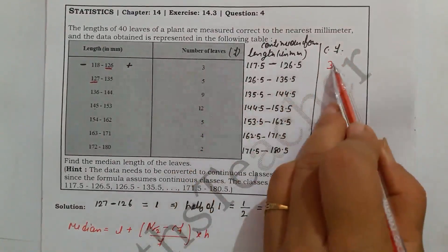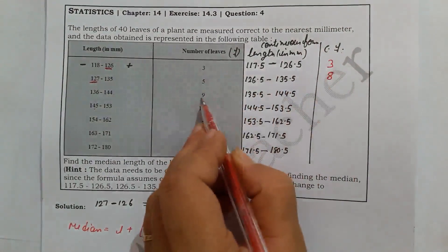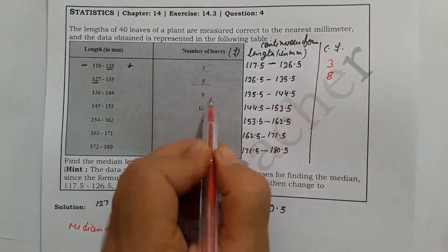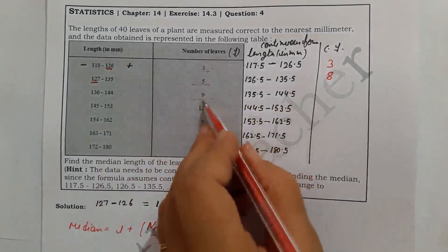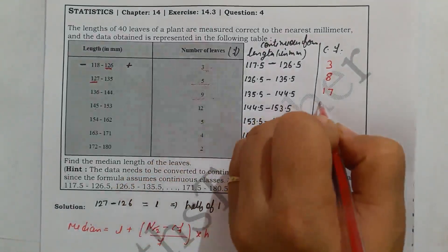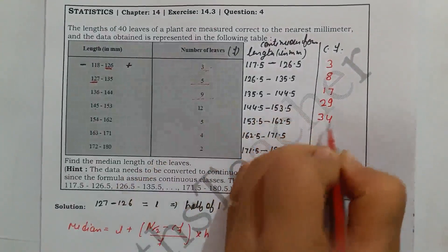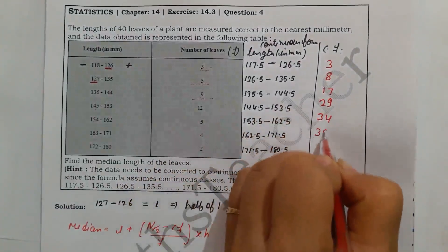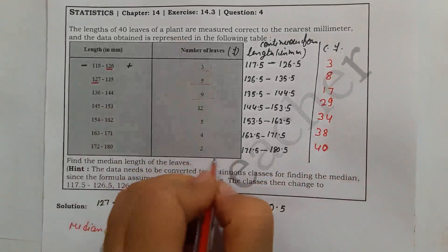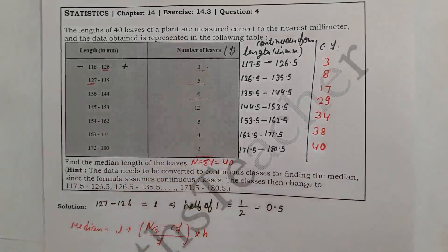Adding the frequencies cumulatively: 3, then 3+5=8, then 8+9=17, then 17+12=29, then 29+5=34, then 34+4=38, then 38+2=40. The sum of all frequencies equals 40, which is our total number of leaves — confirming n = 40.